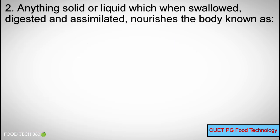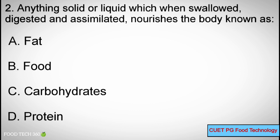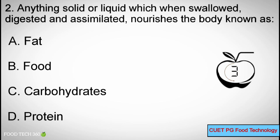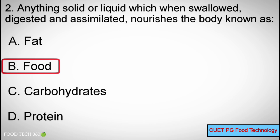Question number 2. Anything solid or liquid which when swallowed, digested and assimilated nourishes the body is known as: Options: A. Fat, B. Food, C. Carbohydrates, D. Protein. Correct answer: B. Food.